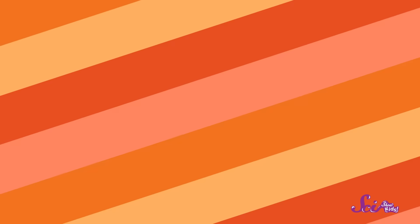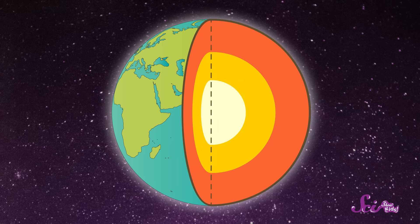But what's really underground is even cooler than what you might imagine. Let's find out what's going on inside our planet. The Earth is made up of layers, kind of like a cake, or better yet, an egg.